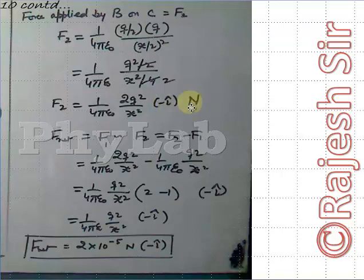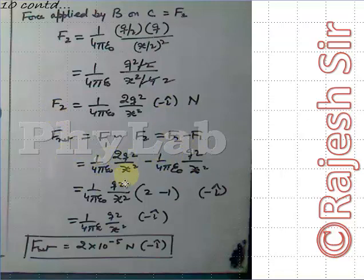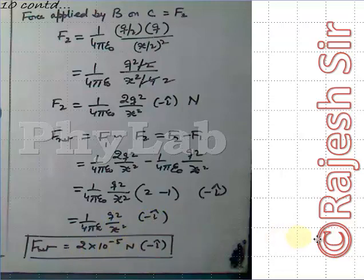Since both forces are at 180° to each other, the net force is found by subtracting the smaller from the larger. F2 is the bigger force, so the net force = F2 − F1 = 1/(4πε₀) × 2Q²/x² − 1/(4πε₀) × Q²/x² = 1/(4πε₀) × Q²/x², and since that value equals 2×10⁻⁵ Newton, the net electric force on C is 2×10⁻⁵ Newton directed toward B.